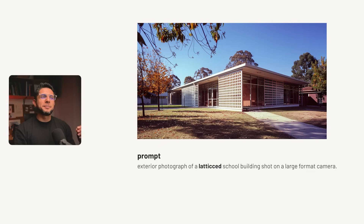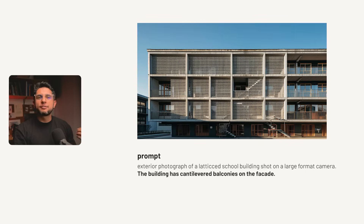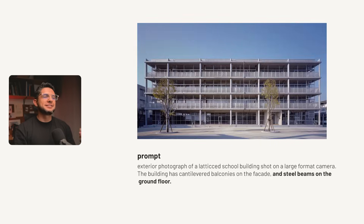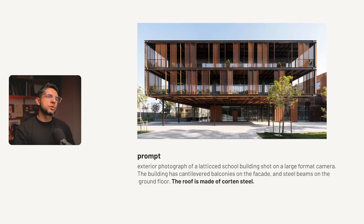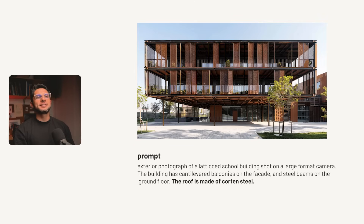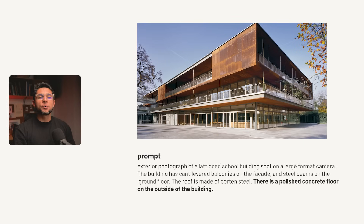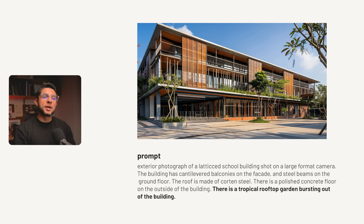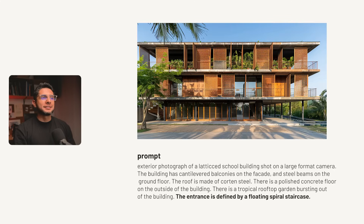I also recommend specifying structural elements like cantilevered balconies, glass facades, and steel beams; facade treatments like brickwork, cladding, or Cor-ten steel; material specificity like polished concrete, wood, or corrugated metal; and distinct architectural features like a rooftop garden, a floating staircase, or intricate masonry.